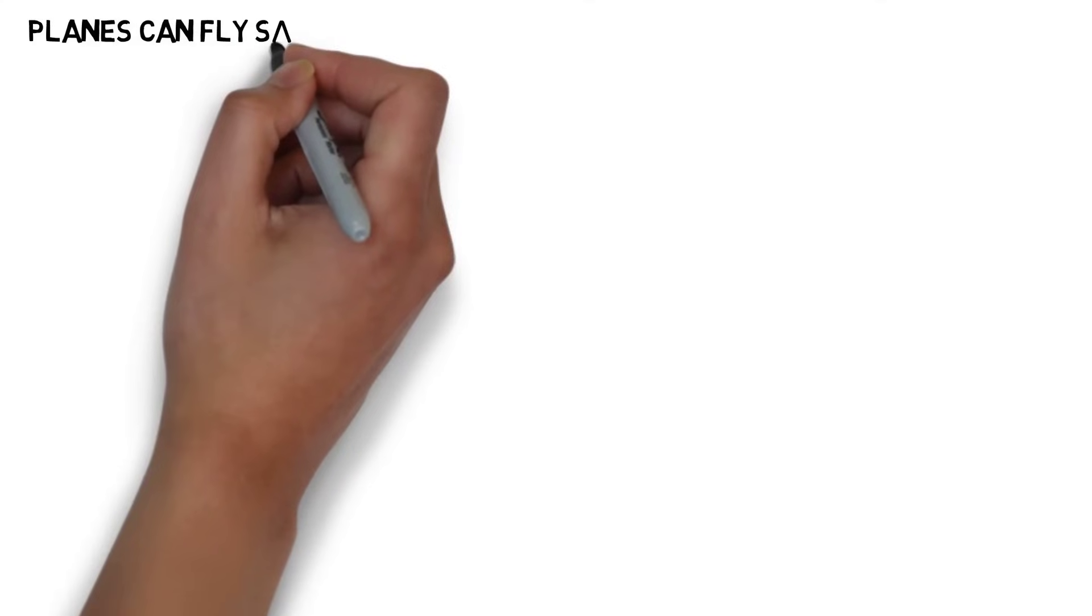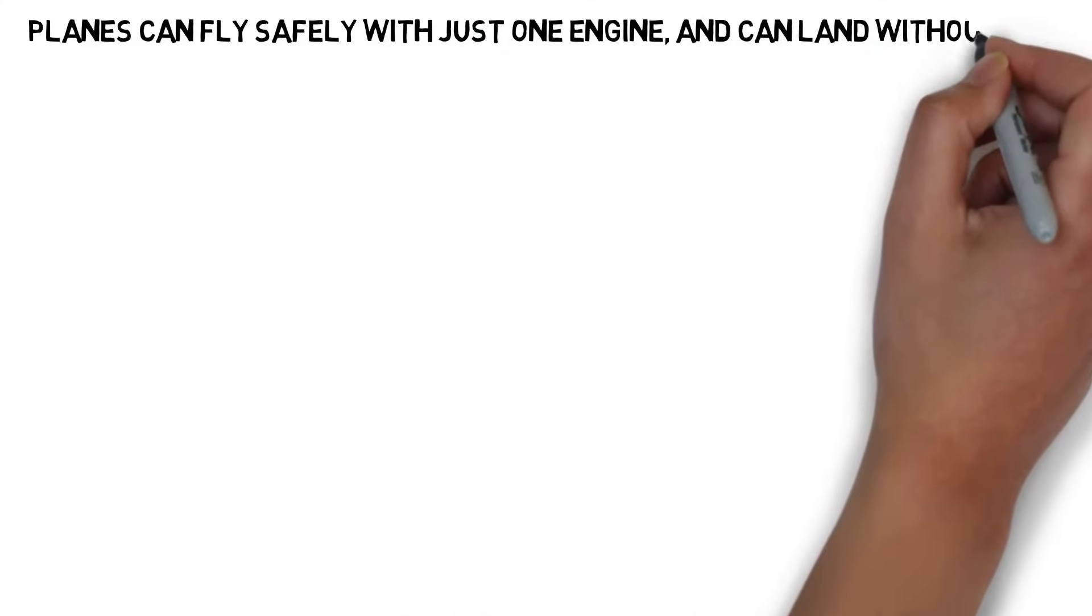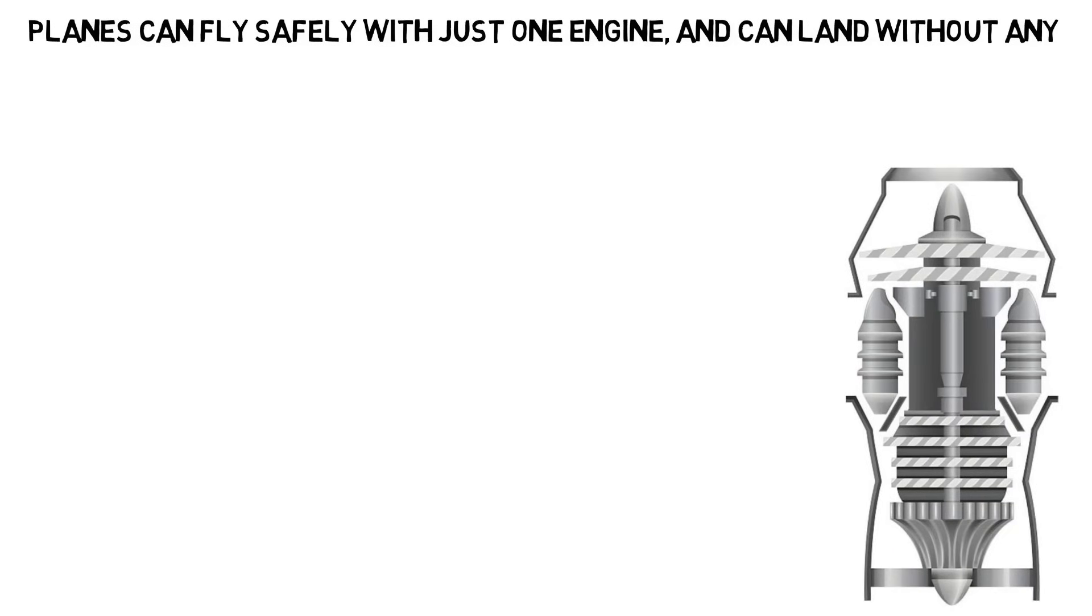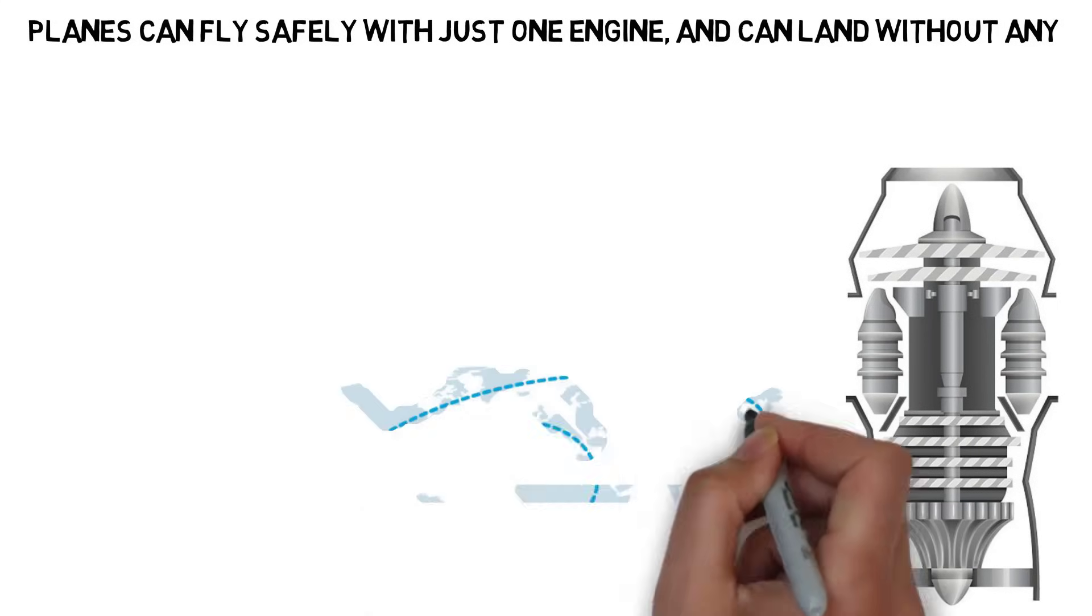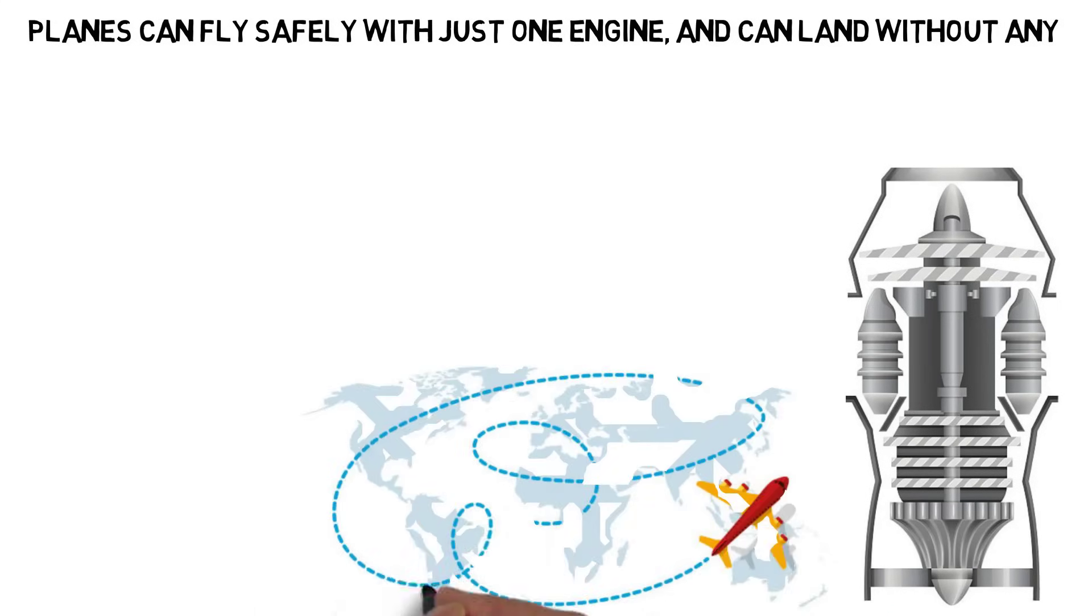3. Planes can fly safely with just one engine and can land without any. Although it might seem like the engines are the only thing that's keeping the plane in the sky, they're only part of the equation. They provide thrust, but the plane can fly just fine if one of them goes out.